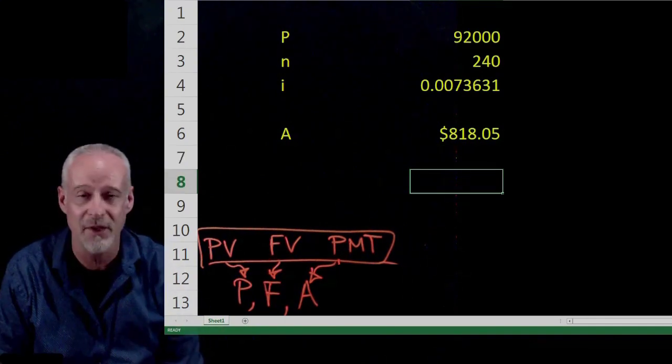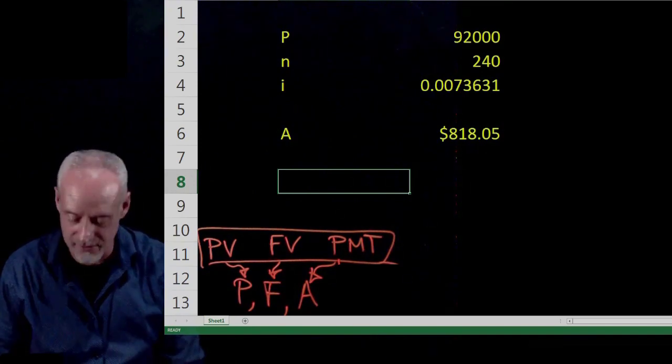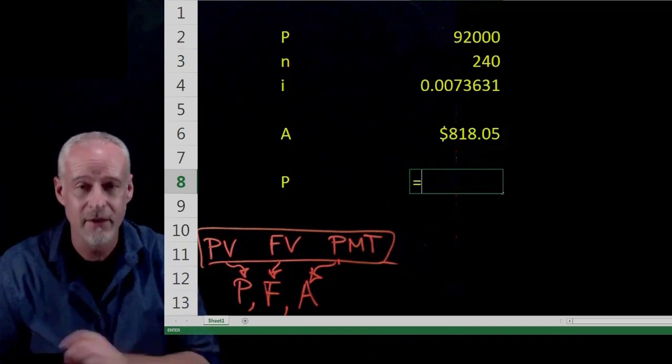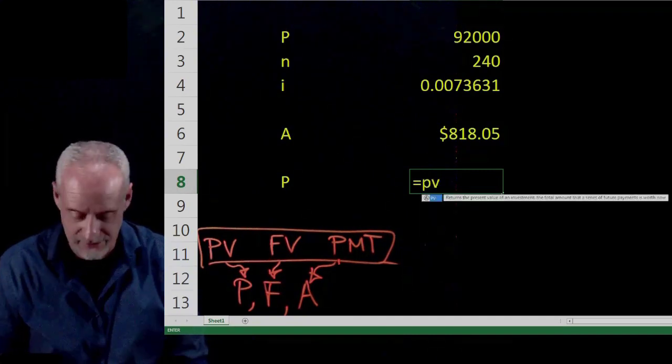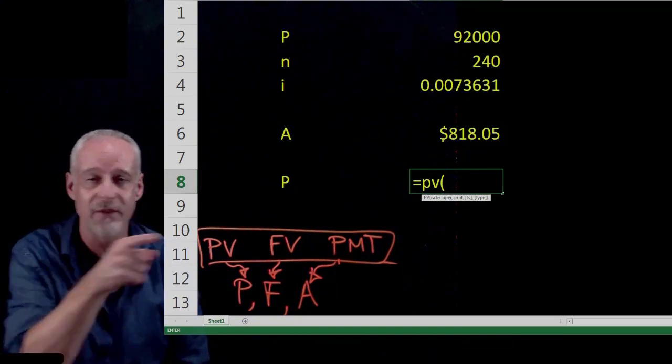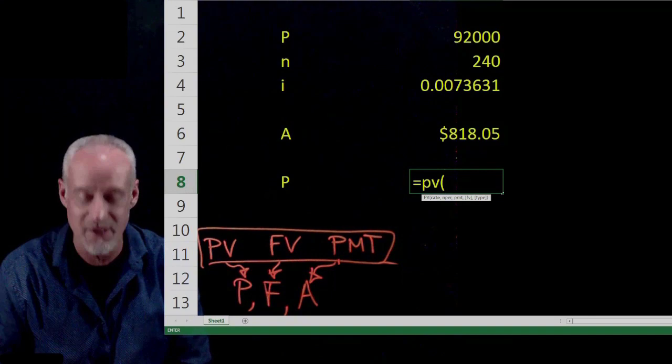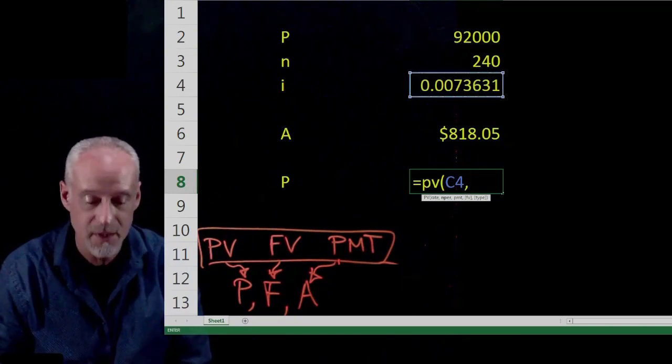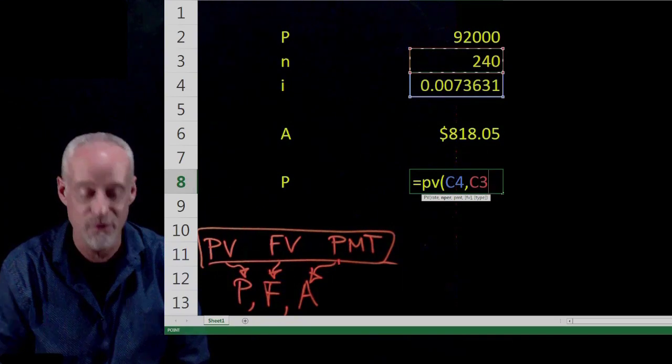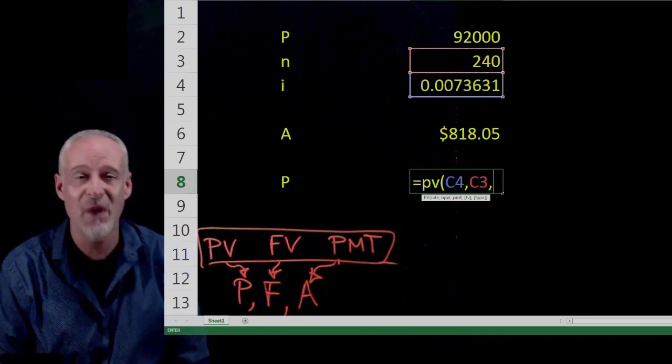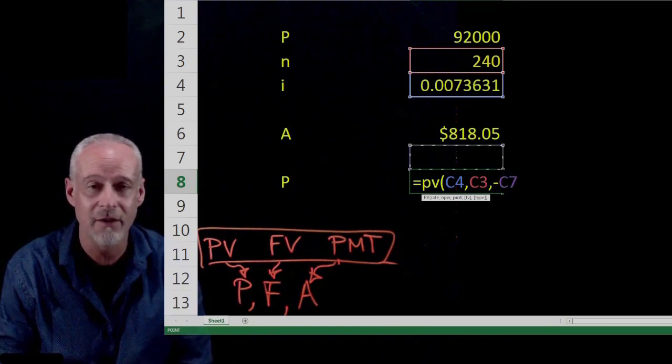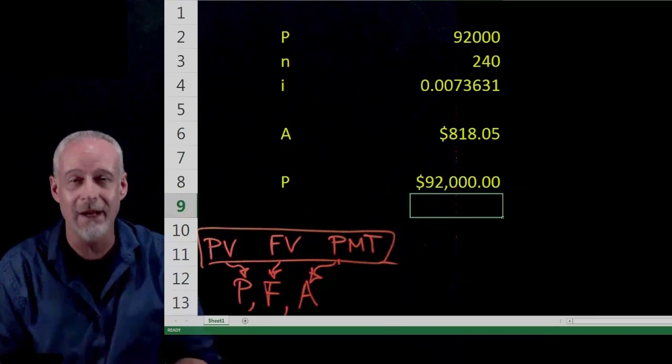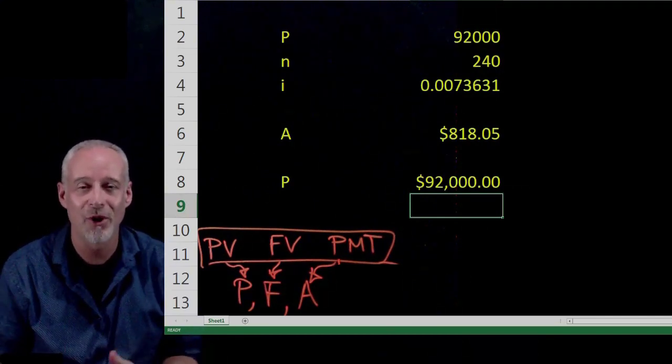Let's test it. Let's see if we can back calculate the P using the PV formula. So I'm going to hit the plus sign again. And then I'm going to type PV in Excel. It prompts me, what's the rate? So I go back up and I highlight the interest rate. And then it says number of periods. And I go back up to the number of periods, which is 240. And then it says, what's the payment? And I'm going to put a negative sign here. And I'm going to say the payments are $818.05. And voila. Look at that. It gives me exactly $92,000, my original P.